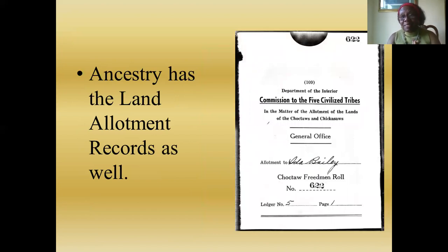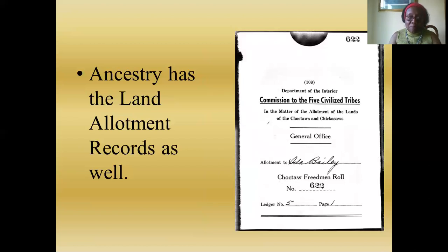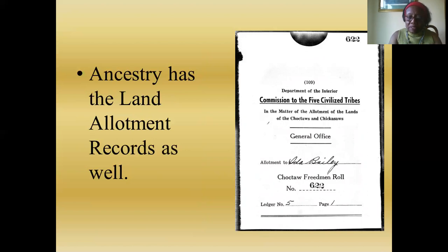Ancestry does have the land allotment records. Many people don't realize that the purpose of the Dawes records was to redistribute land into personal allotments — personal parcels of land to people who had owned land in common for decades. The goal was to determine eligibility for receipt of land allotments. On Ancestry you can get the legal land description and go on other sites to determine where that allotment actually was.